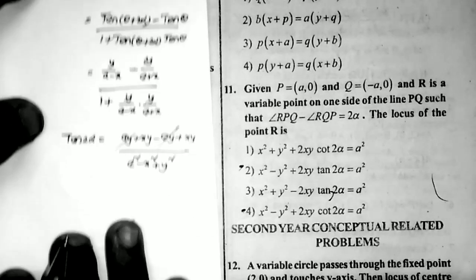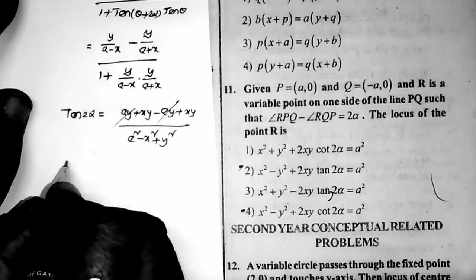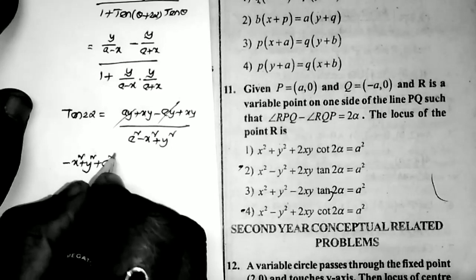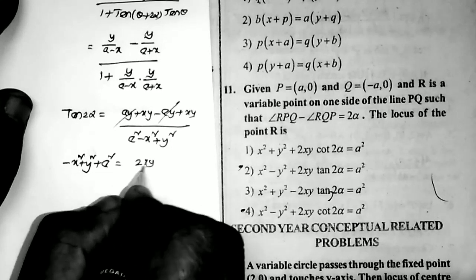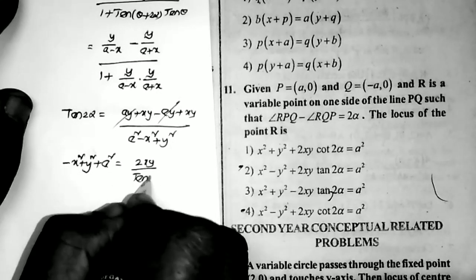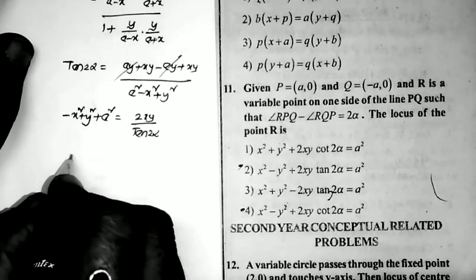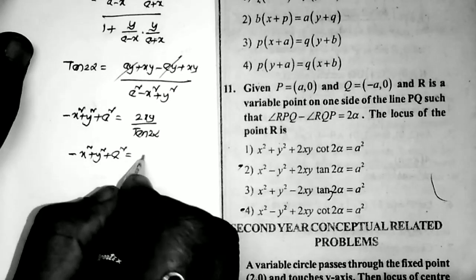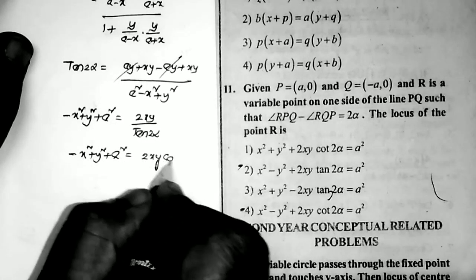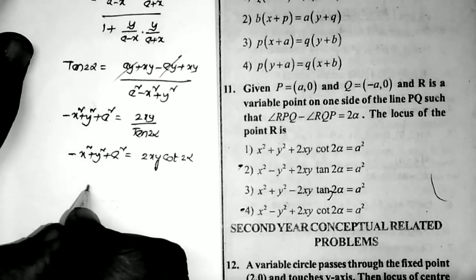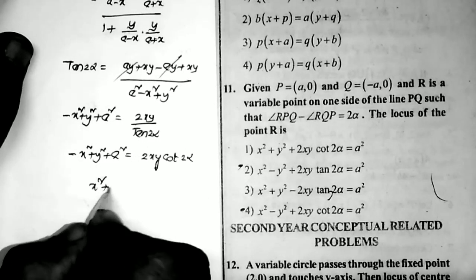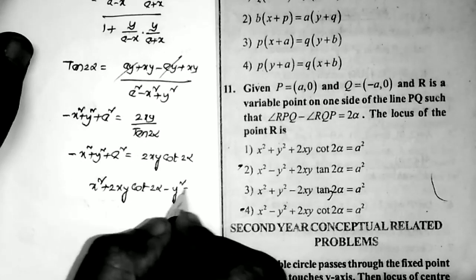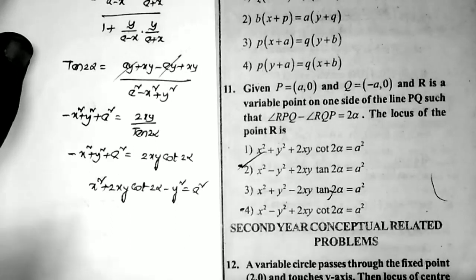Rearranging: a² - x² + y² = 2xy · cot 2α. Moving terms: x² + 2xy cot 2α - y² = a². This is the second option and the correct answer.